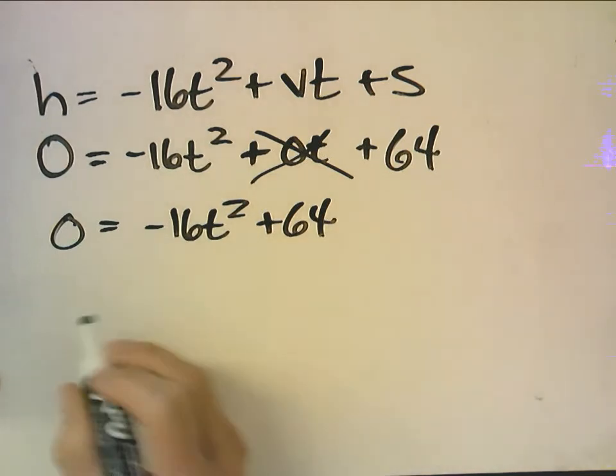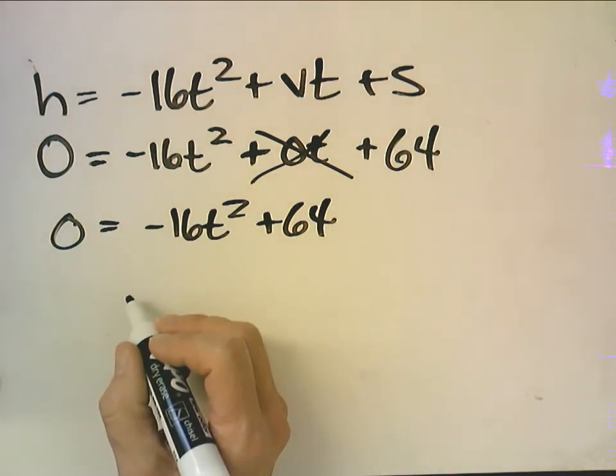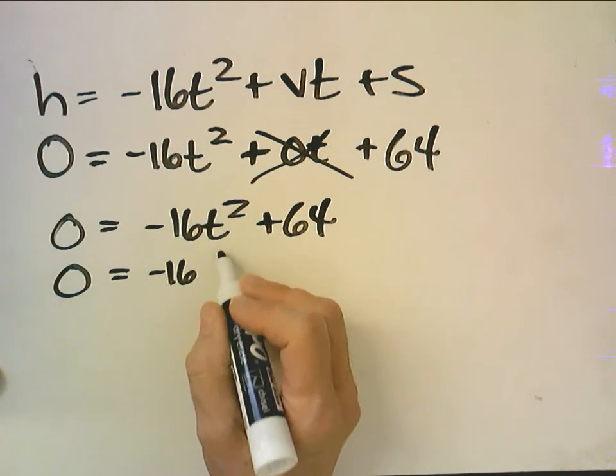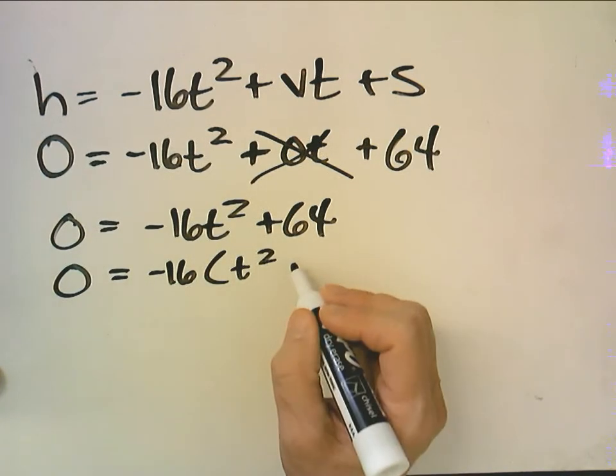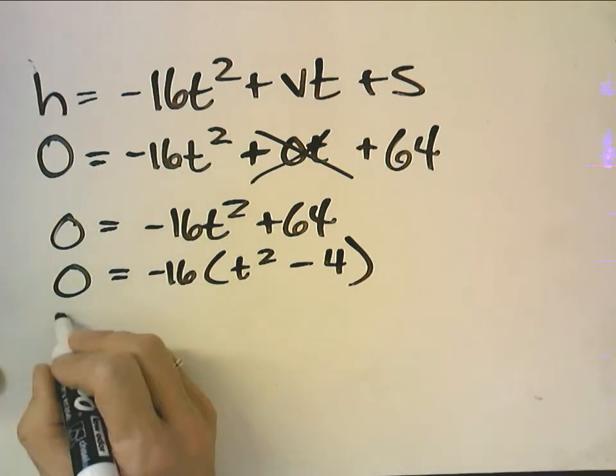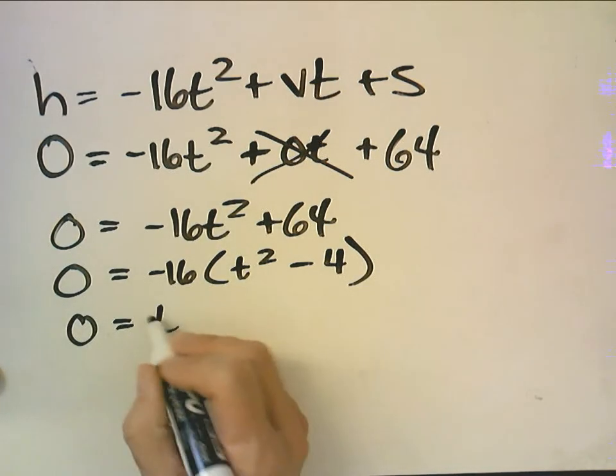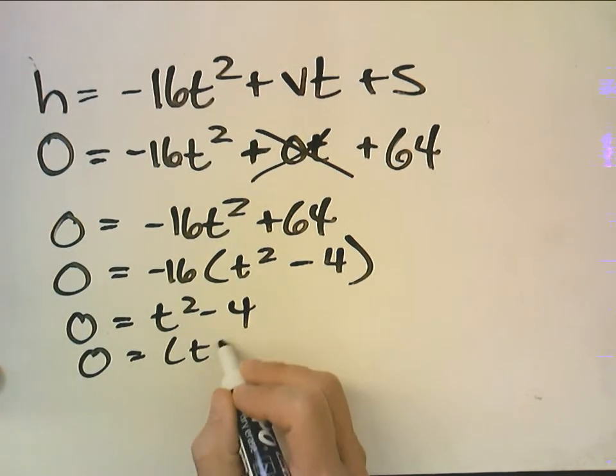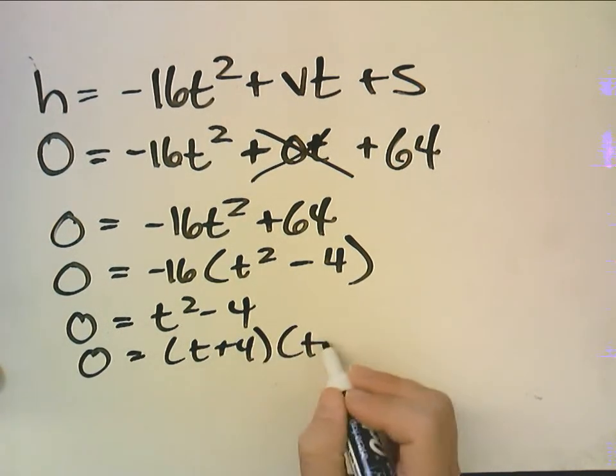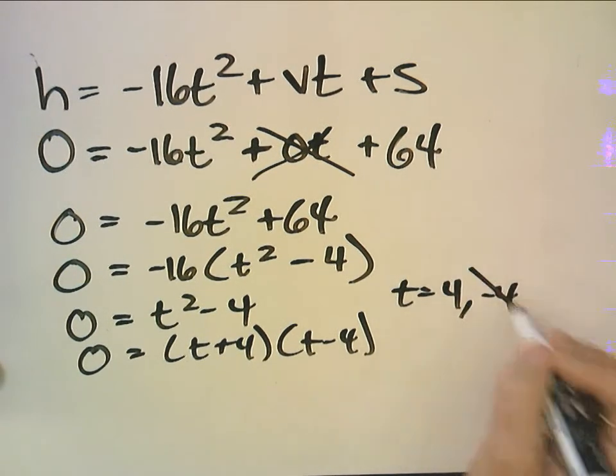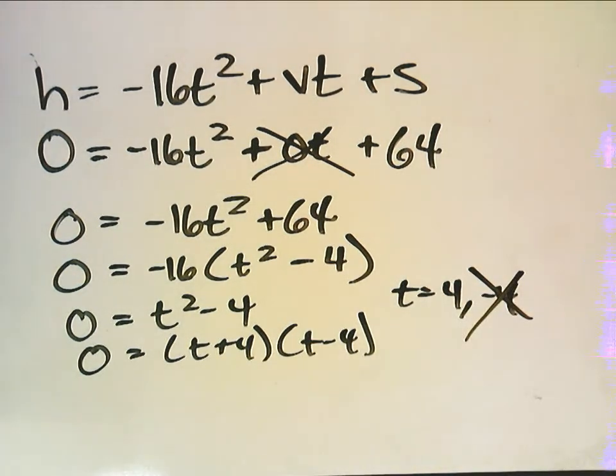So now to solve this I would first factor out a negative 16 and I get t squared minus 4. And I divide by negative 16 so 0 equals t squared minus 4. I factor this t plus 4 t minus 4, so t either equals 4 or negative 4. Time can't be negative so the answer...